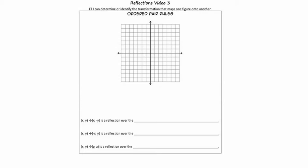This problem actually provides you a little bit of freedom — you're able to plot whatever point you want to form whatever shape you want. I'm going to keep it simple and plot a triangle, starting with a point up here, a point down here, and a point down here. I'm going to call these points A, B, and C. Point A is located at negative 4, 6. Point B is at negative 5, 4, and C is at negative 2, 2.